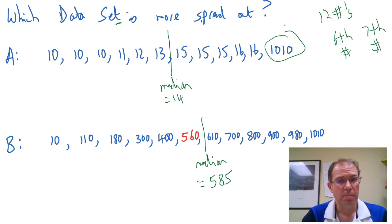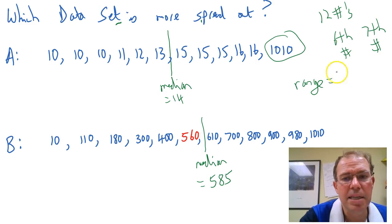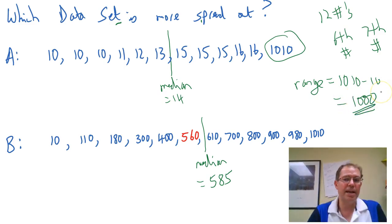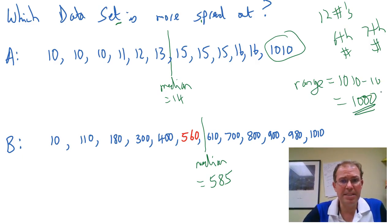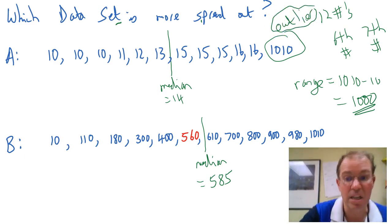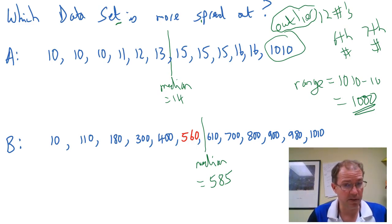Don't worry if you said A, because you've probably realised that the range — which is the max minus the min — doesn't really tell us anything, because the range for both sets of data is 1010 minus 10, so the range is 1000 for both sets. So the range isn't really showing us the difference in the spread of the data. That's because the range gets upset by this outlier, 1010. The range only takes into account the very biggest number and the very smallest, so a really big or really small number can distort it and it doesn't illuminate differences in spread.